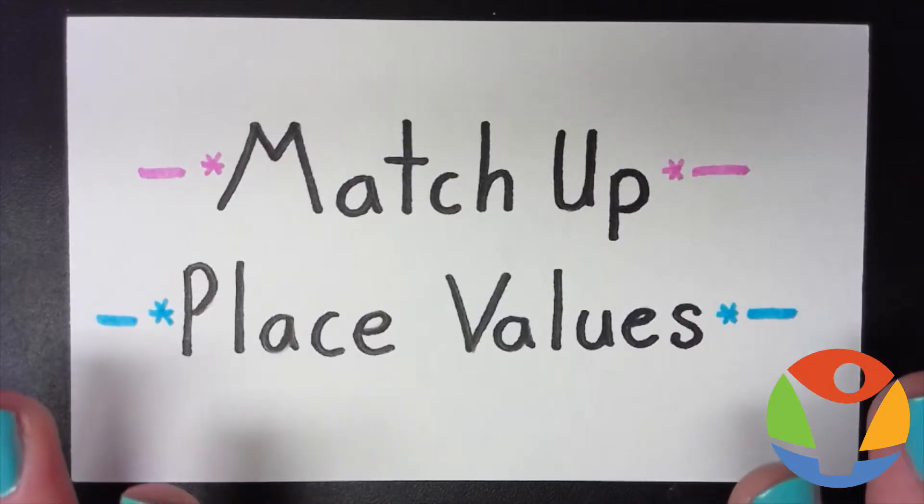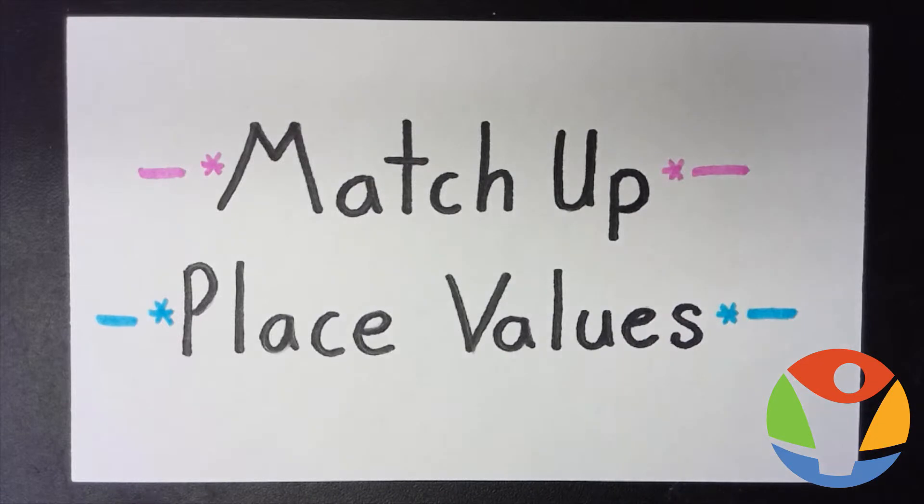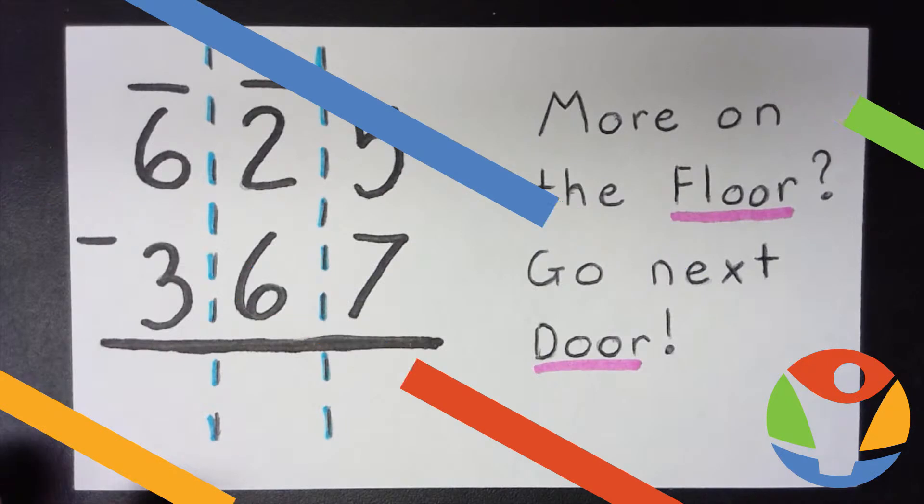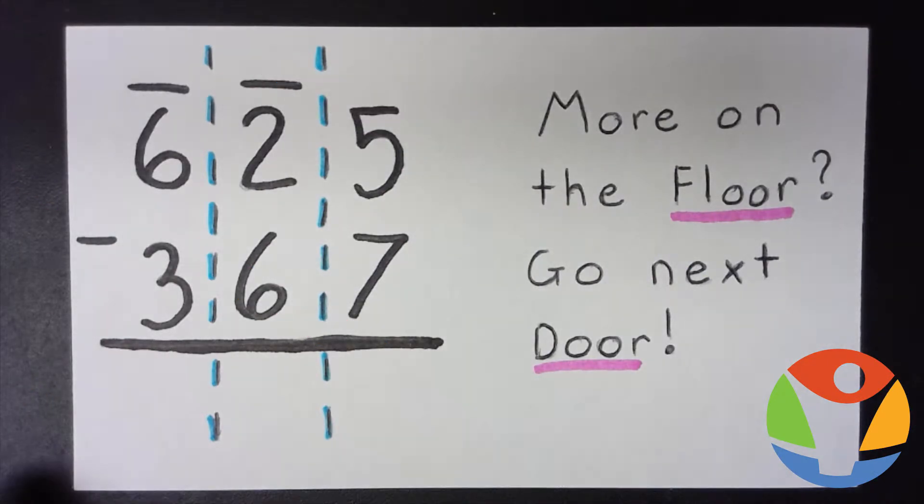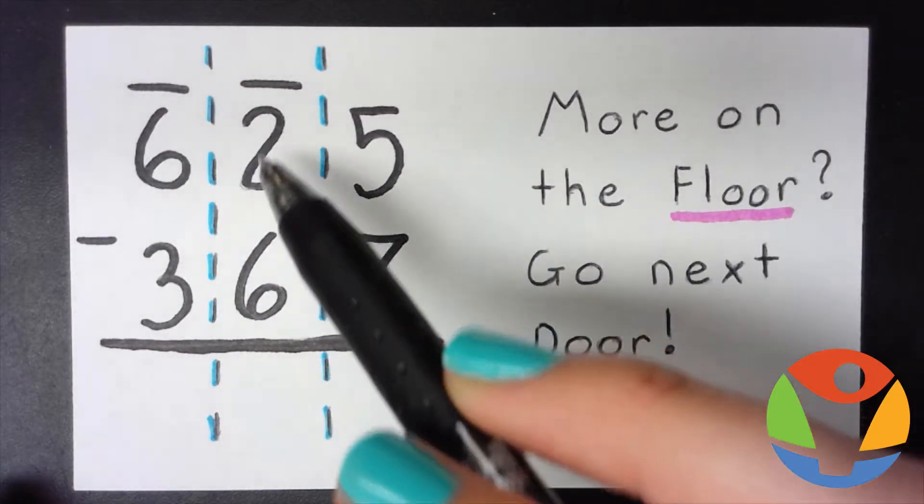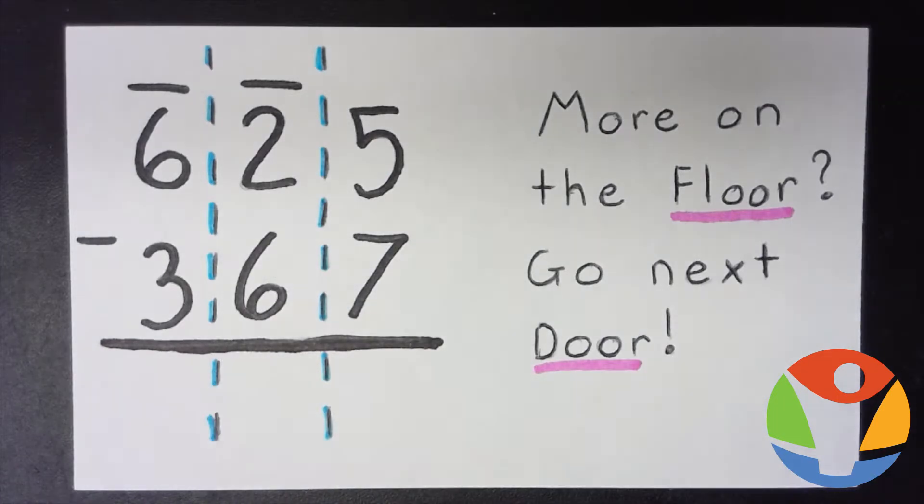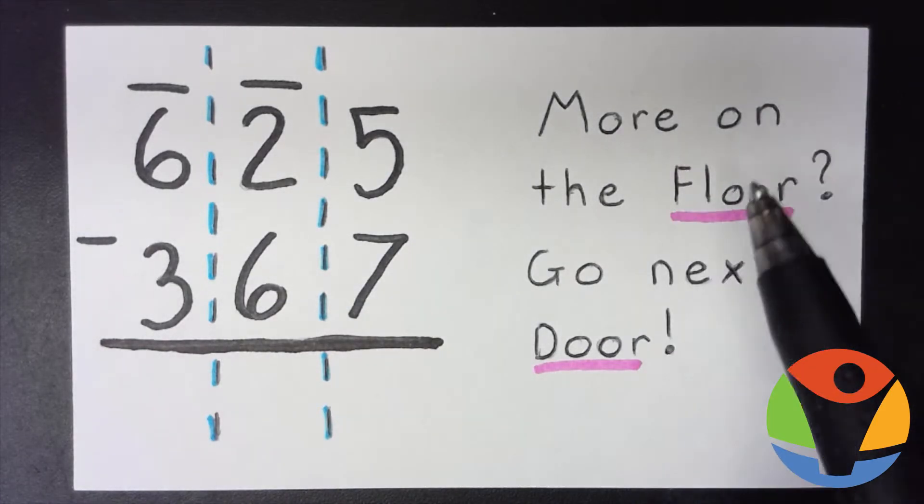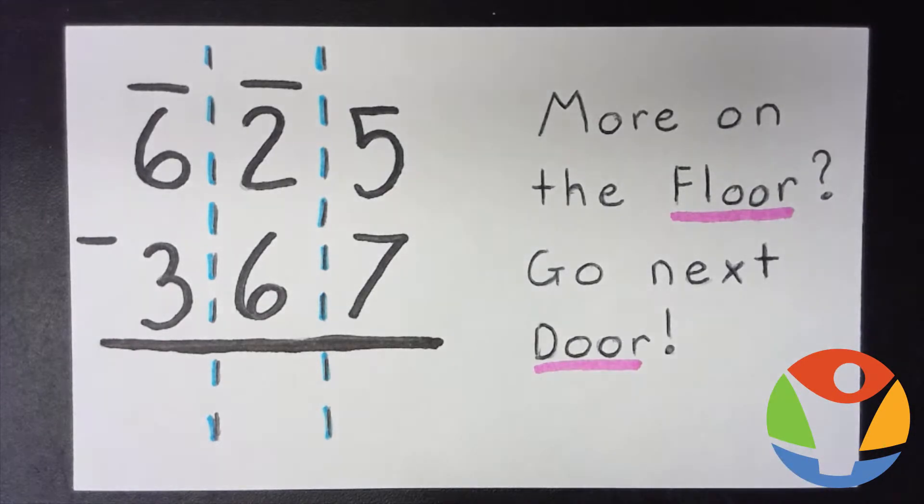So here are our place values all matched up. And now our rule here is: more on the floor, we go next door. So this is where we are going to regroup or borrow from next door.